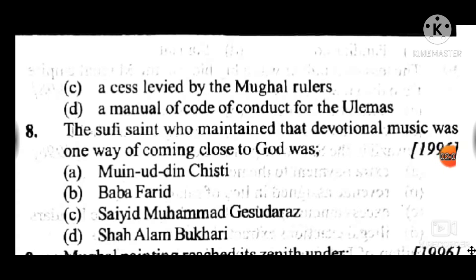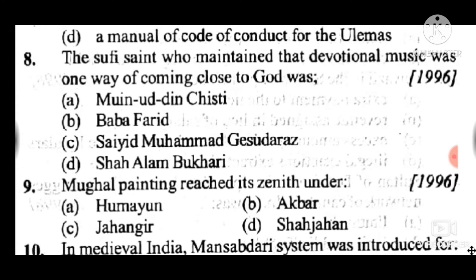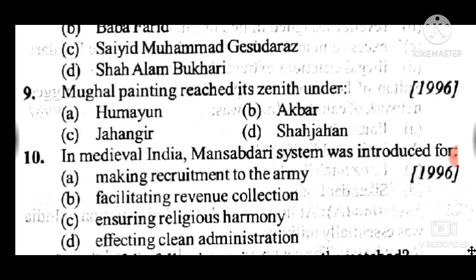Question 8: The Sufi saint who maintained that devotional music was one way of coming close to God was — answer to question 8 is A: Moinuddin Chishti. Question 9: Mughal painting reached its zenith under — answer to question 9 is C: Jahangir. Question 10: In medieval India the Mansabdari system was introduced for — answer to question 10 is D: effecting clean administration.